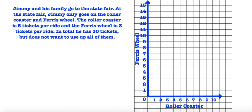Here we have our first word problem and it reads: Jimmy and his family go to the state fair. At the state fair, Jimmy only goes on the roller coaster and Ferris wheel. The roller coaster is five tickets per ride and the Ferris wheel is three tickets per ride. In total he has 30 tickets but does not want to use up all of them.